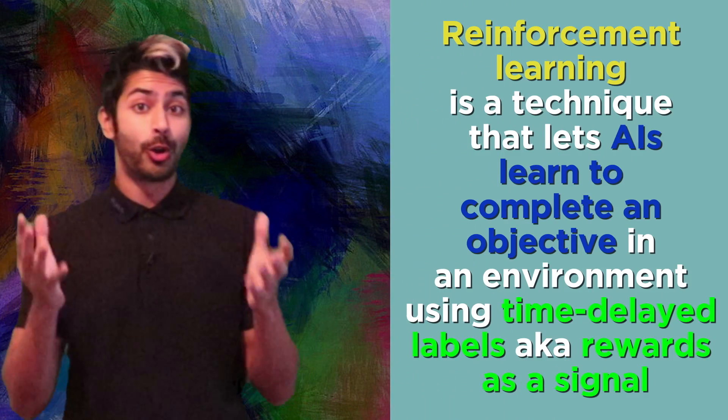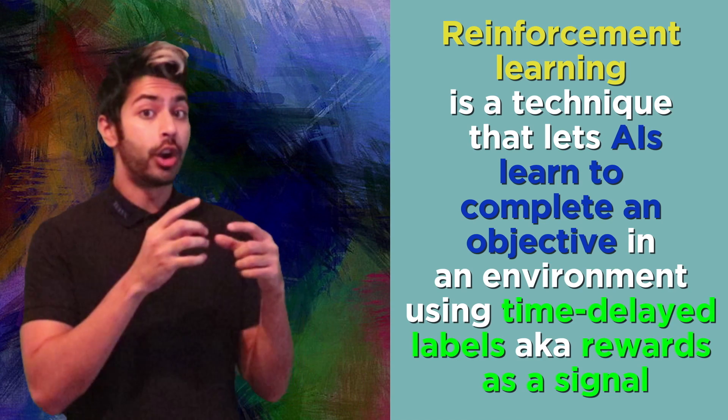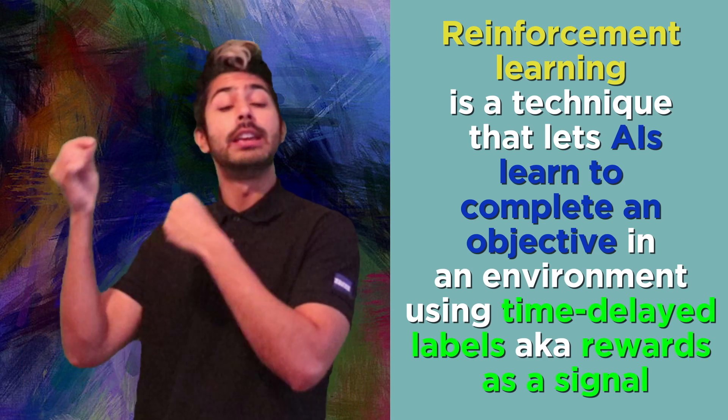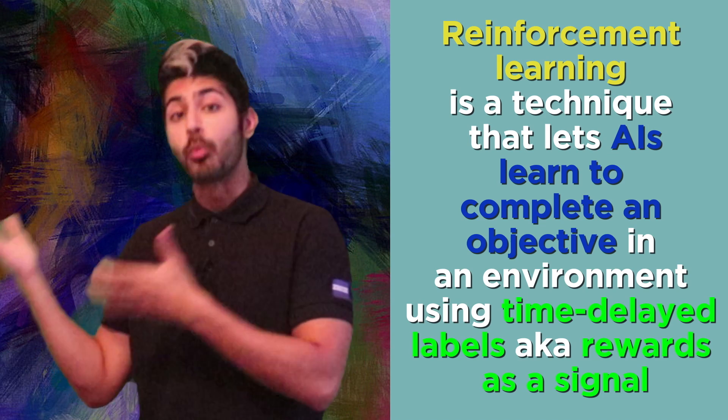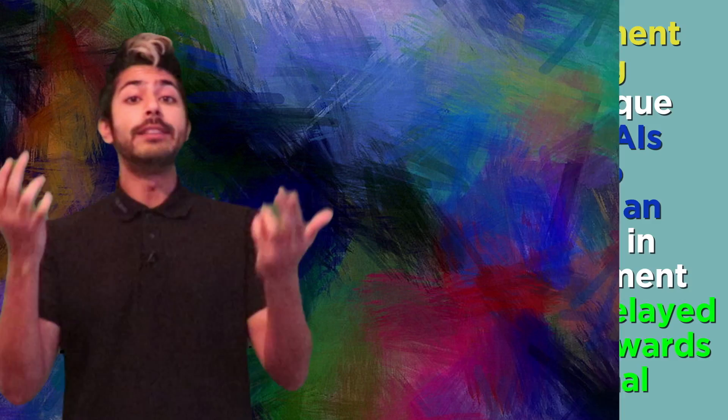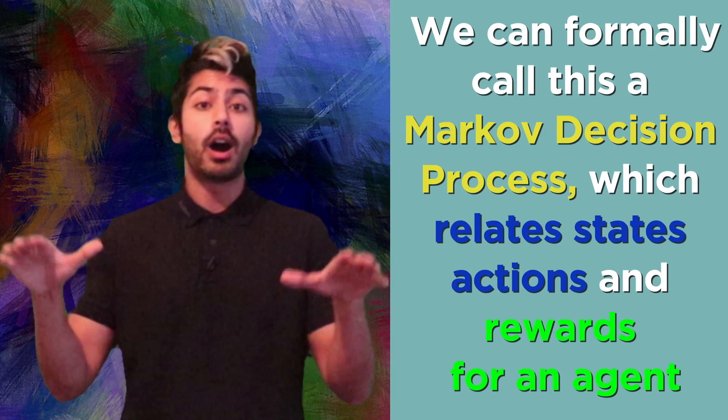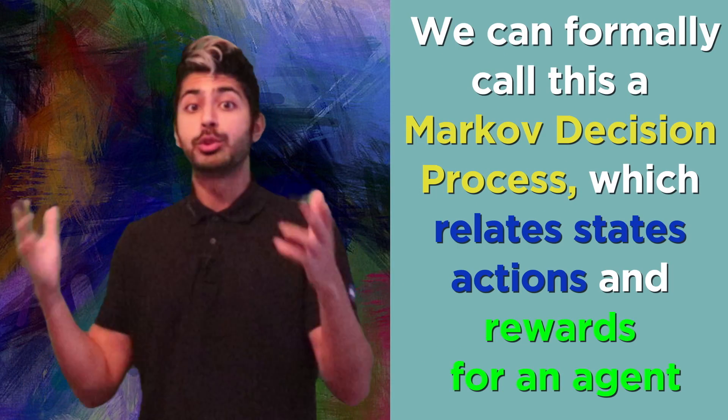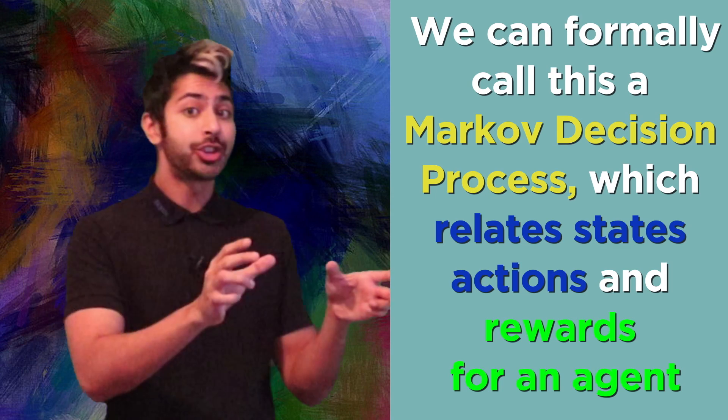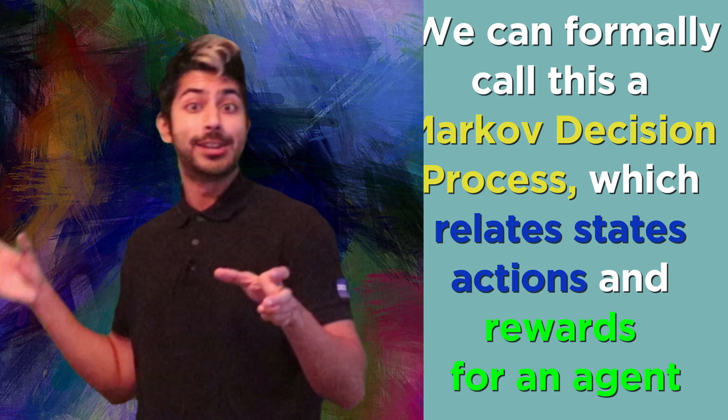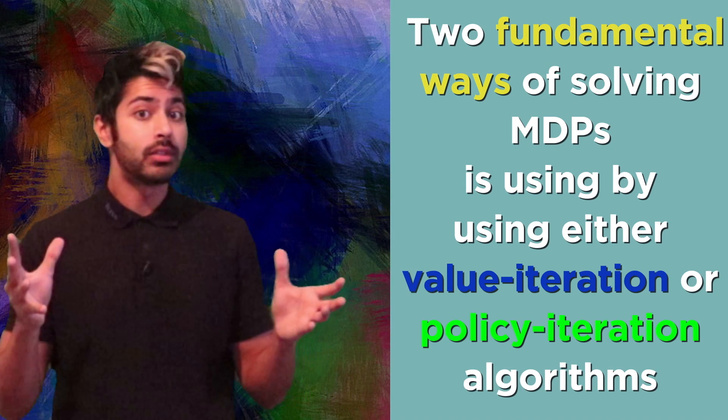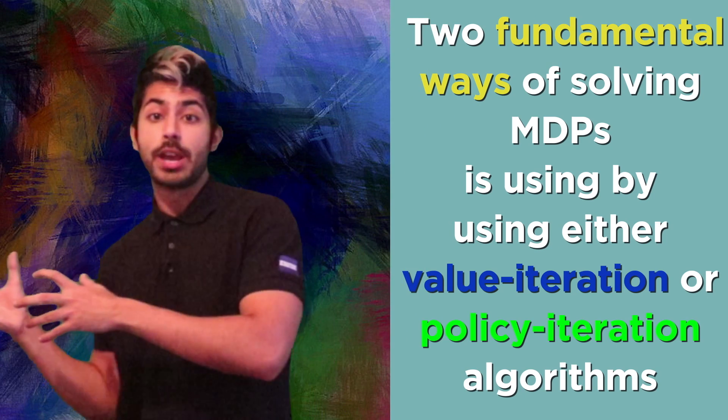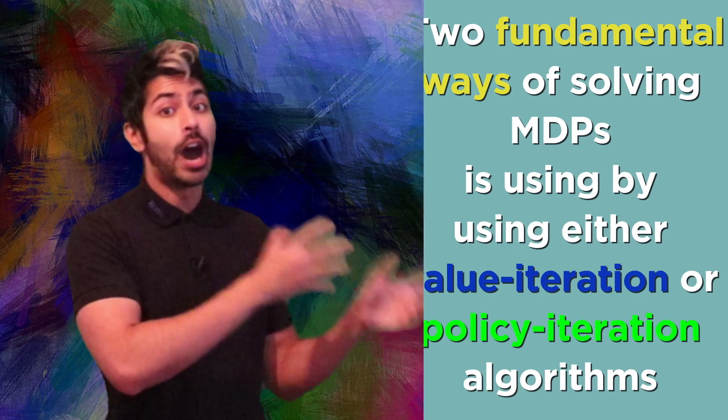So there are three important points to remember from this video. Reinforcement learning is a technique that lets AIs learn to complete an objective in an environment using time-delayed labels, aka rewards, as a signal. We can formally call this a Markov decision process, which relates states, actions, and rewards for an agent. And two fundamental ways of solving MDPs is by either using a value iteration or policy iteration algorithm.